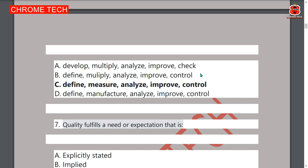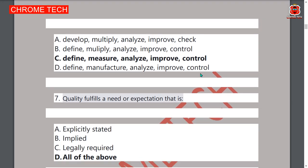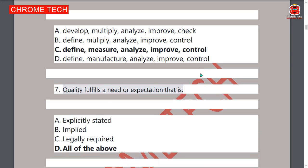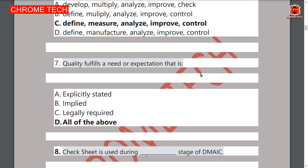DMAIC stands for Define, Measure, Analyze, Improve, Control — that is the correct answer. Seventh question: quality fulfills a need or expectation that is — all of the above, option D is the correct answer.